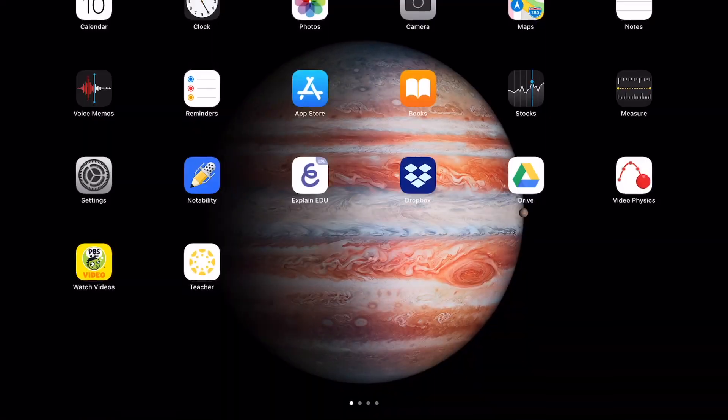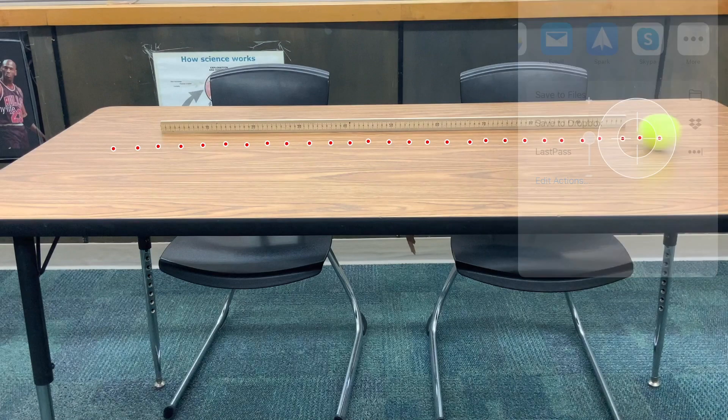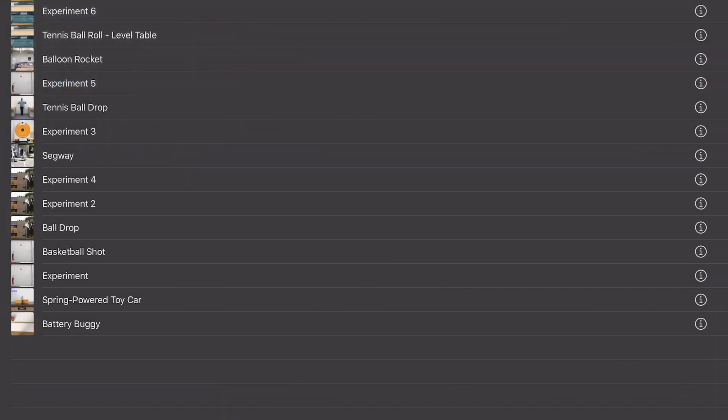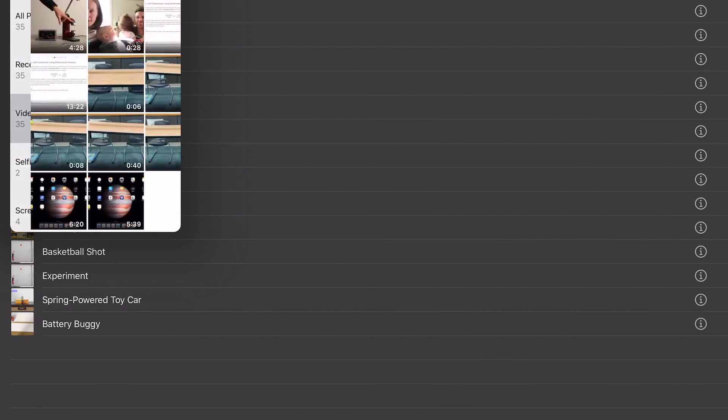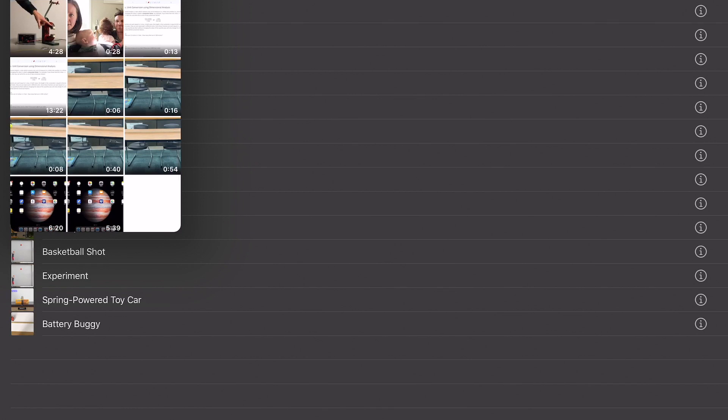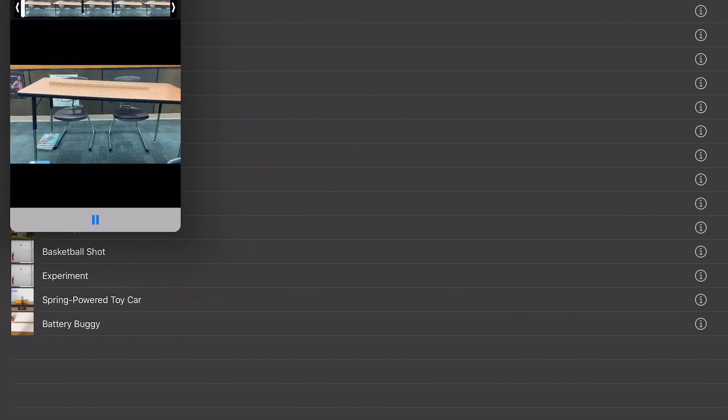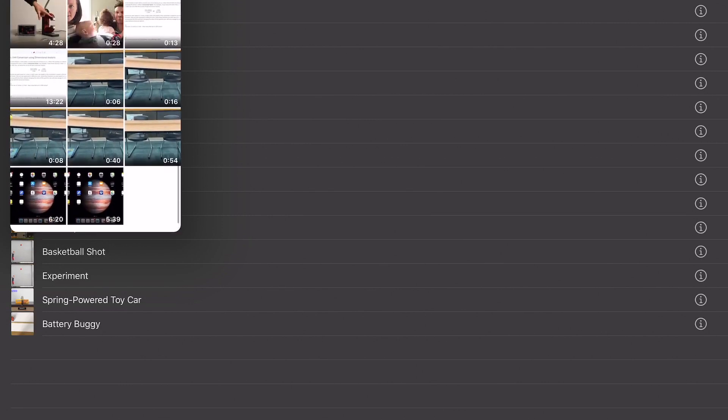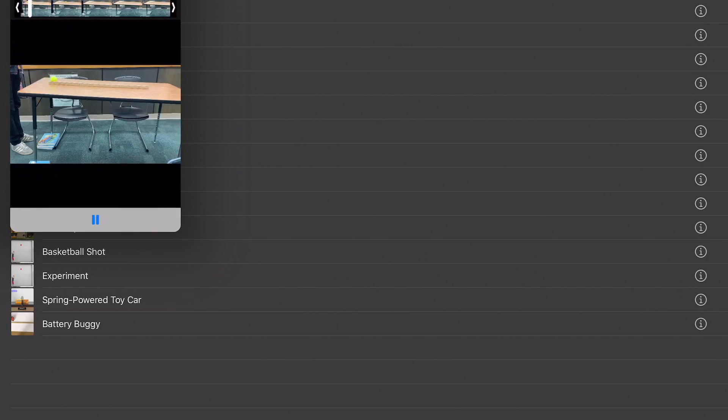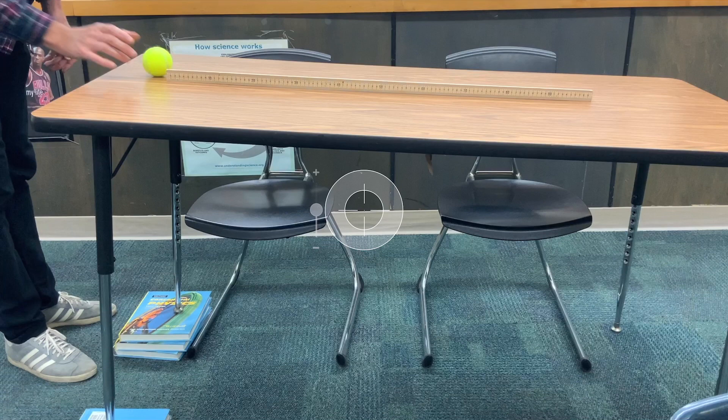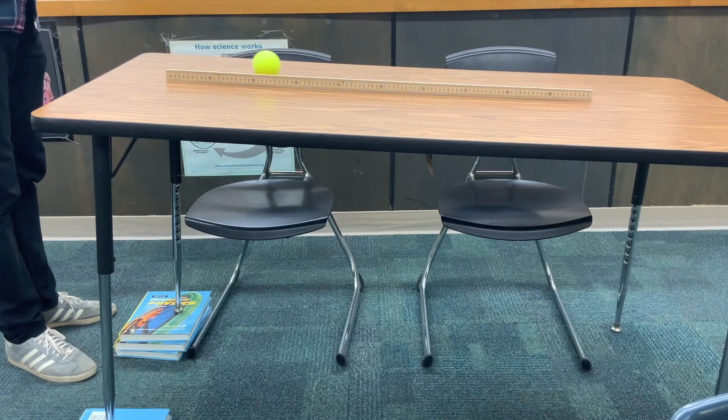And then I'm going to go ahead and open video physics and start a new experiment. I'm going to choose an existing video and I'm going to grab that video that I just saved. Double checking to see if that was the trimmed video. That's not the trimmed video. That's the trimmed video. All right, so I've got it right here.